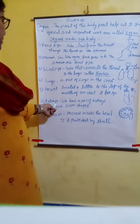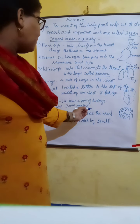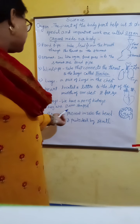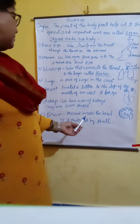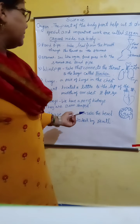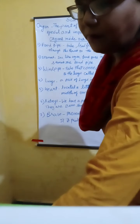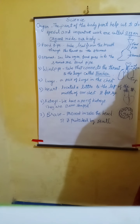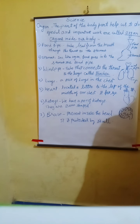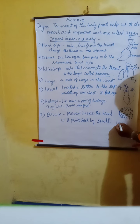The sixth internal organ is the kidney. We have a pair of kidneys. They are bean-shaped.